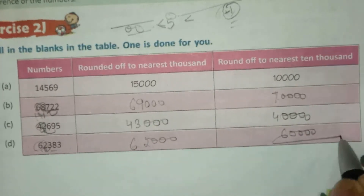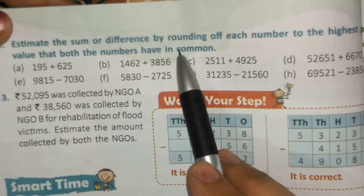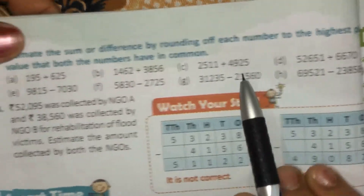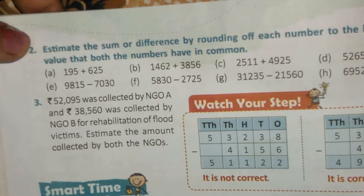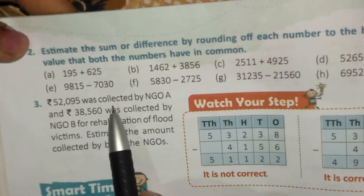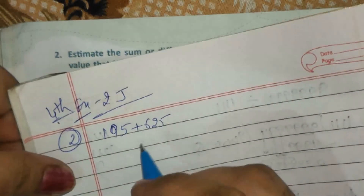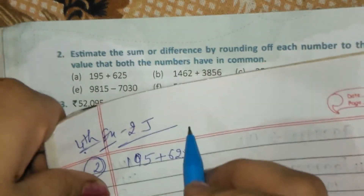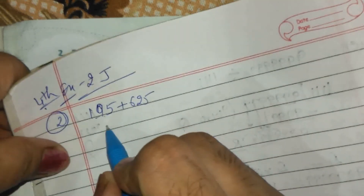Next, portion number 2: estimate the sum or difference by rounding each number to the highest place value that both numbers have in common. So we need to find the estimate using the highest common place value. Where a sum is given, find the sum; where a difference is given, find the difference. Here they give you this sum — we write it out. Firstly, we need to find the estimate of this sum by rounding. Ones, tens, hundreds — the term here is hundreds, so we write: rounding of the sum.